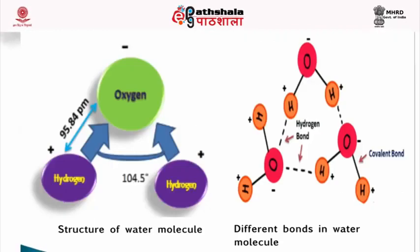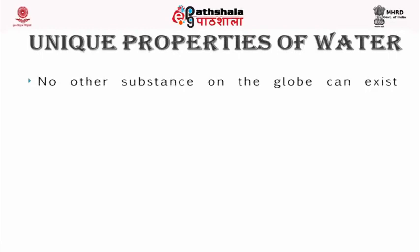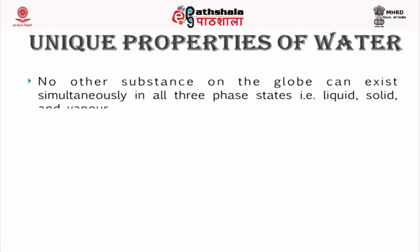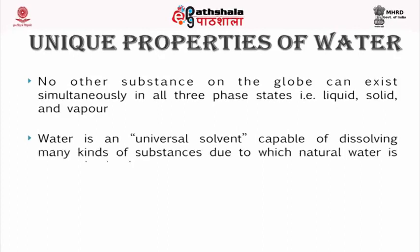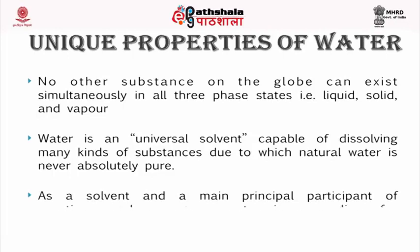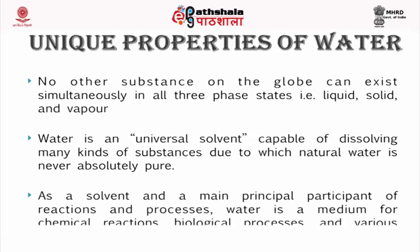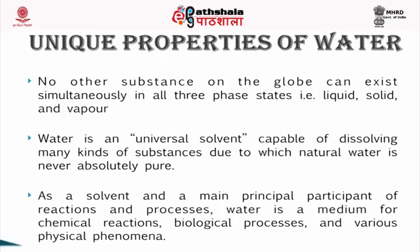This is the structure of the water molecule showing the negative and positive charge, and on the right hand side it shows hydrogen bonding and the covalent bond. Unique properties of water: No other substance on the globe can exist simultaneously in all three phase states, that is liquid, solid, and vapor. Water is a universal solvent capable of dissolving many kinds of substances, due to which natural water is never absolutely pure. As a solvent and main participant of reactions and processes, water is a medium for chemical reactions, biological processes, and various physical phenomena.